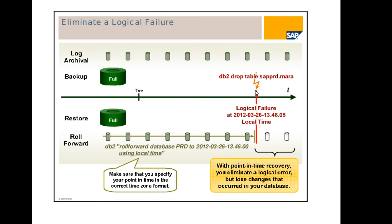Here is a practical example: I took a full backup on Monday, did some transactions, and at this point dropped a table called MARA. The logical failure happened on 26th March around 13:48 local time. When rolling forward, I give a time before that — like 13:46 — using the 'using local time' keyword, so the roll forward does not replay the drop table transaction and the table is recovered successfully.